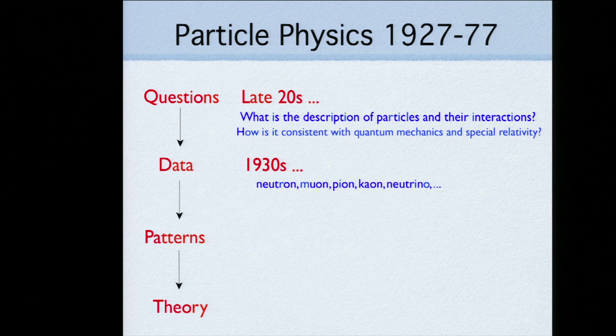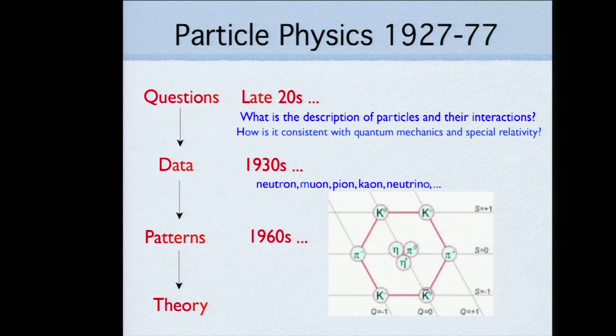The data was really pouring in, starting with neutrons, muons, began with particular particles, but ended with symmetries and interactions. Along the way, there were plenty of patterns emerged. Here's a pattern from the early 60s of the kaons and pions forming this hexagonal structure. It's pretty obvious there's a pattern behind there, and that pattern was what led people to introduce quarks as the constituents of all of hadrons.